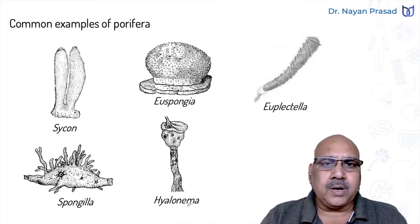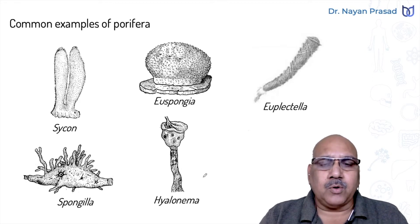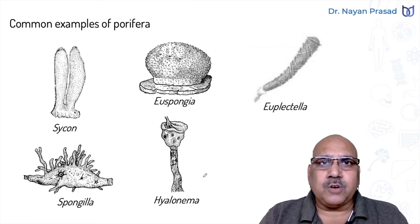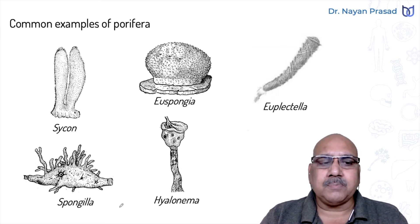These are the common examples of Phylum Porifera. Out of these, most members are marine. The members of the family Spongilidae are the only freshwater members. Spongilla is a freshwater organism.